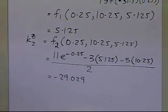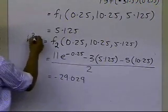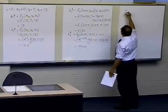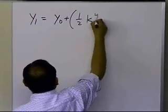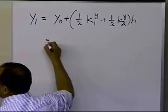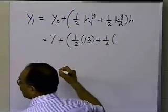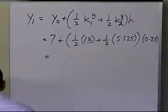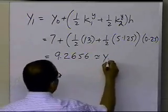So we have all the values we need — k1y, k1z, k2y, and k2z — to calculate y1. With i=0: y1 = y0 + (1/2)(k1y + k2y)·h = 7 + (1/2)(13 + 5.125)(0.25), which turns out to be 9.2656. So this is the approximate value of y at x=0.25.